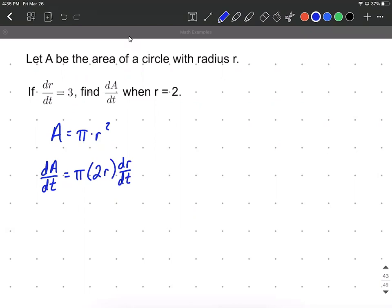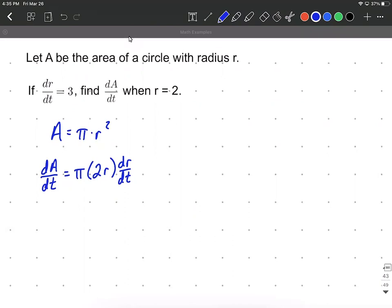All right now that we've taken the derivative implicitly what we want to do is plug in the information that we know. We don't know dA/dt but we're trying to find that so let's plug in the rest of the information. So we have pi times 2 times r we can also put a 2 in that spot based on the information that's given and then dr/dt is 3.